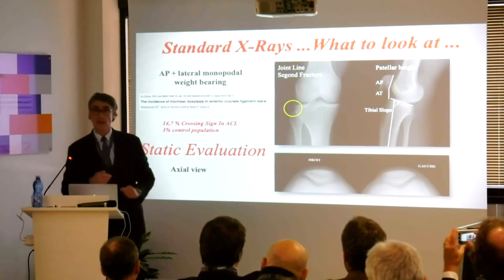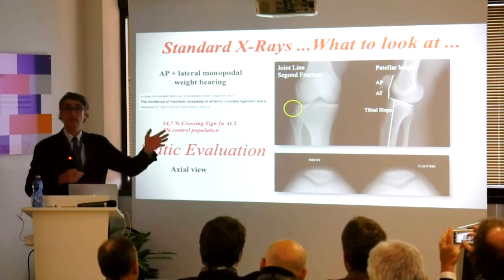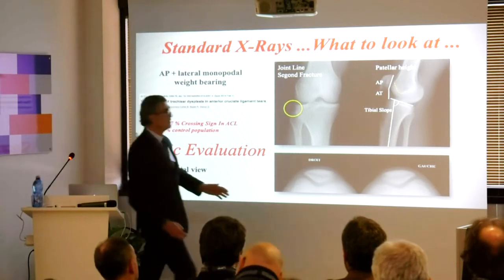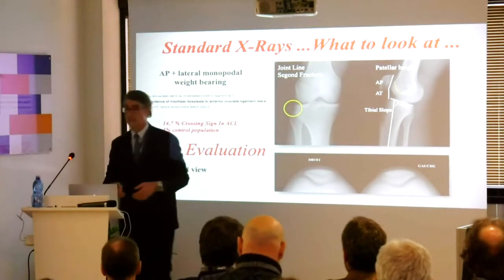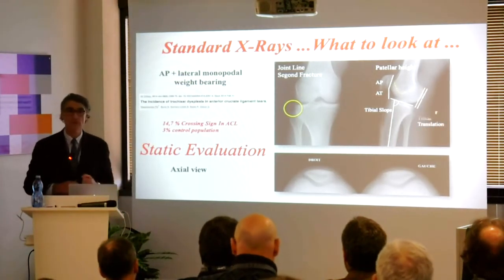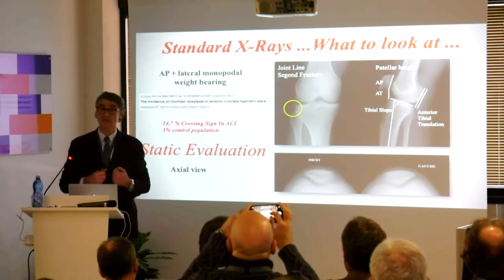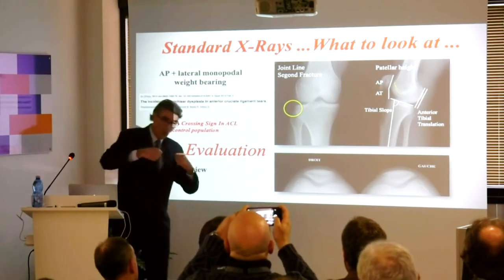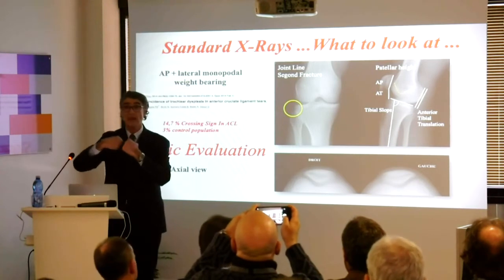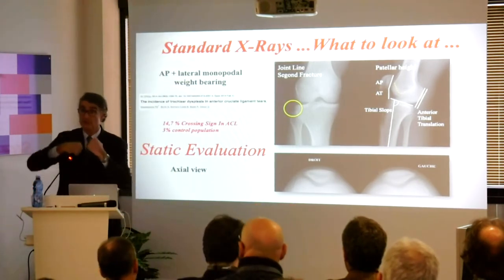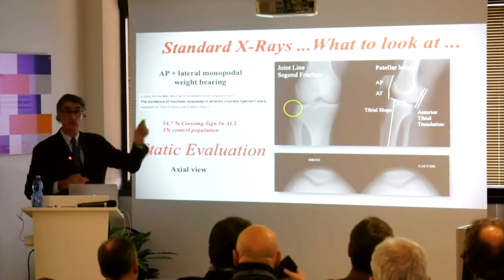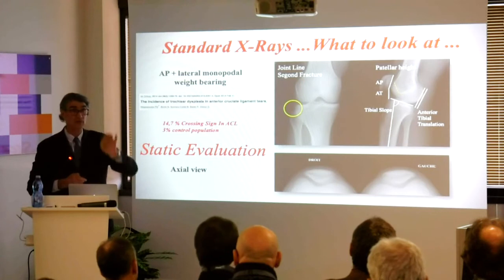Then you measure the slope. There are different types of measurement for the slope — the one we use takes the central part of the tibial shaft and measures the slope. You also measure the anterior tibial translation: the fact that when you walk, you will have some anterior tibial translation. This will stress your graft or stress your ACL. That's something very important — you have to measure it and put it on your chart.